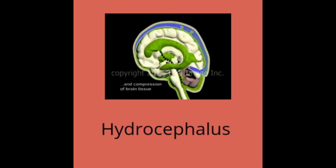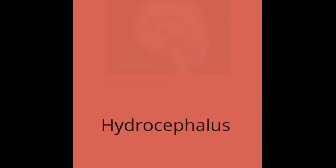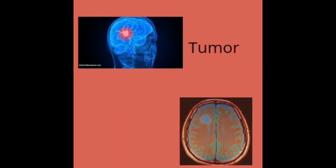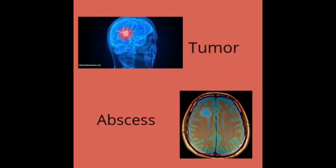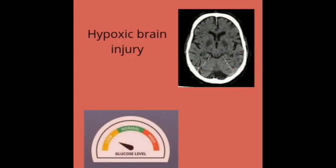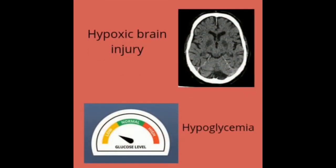Abnormal posturing is also caused by hydrocephalus. Next is brain tumor and brain abscess. Then we have hypoxic brain injury — where the blood supply to the brain is reduced. Another cause is low blood glucose level, that is hypoglycemia.